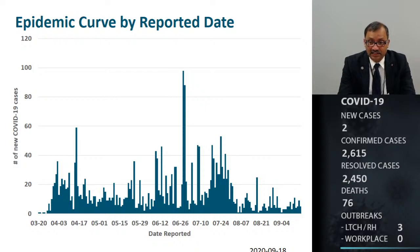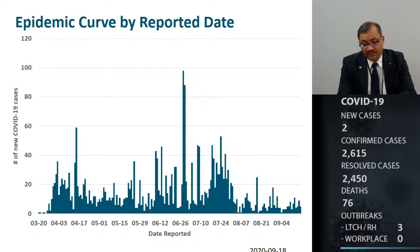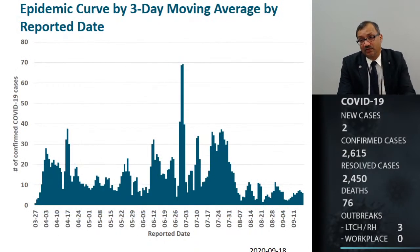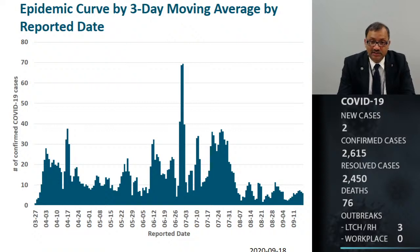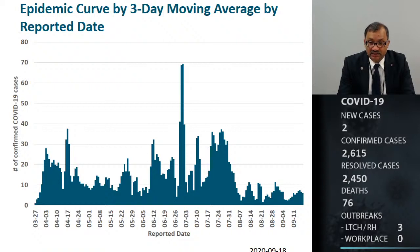Please note that these cases include everyone, whether we are talking about cases in the long-term care home, retirement home, agriculture, farm sector, or community cases. There are a number of ups and downs in this graph, and a better way to look at it is by using a three-day moving average, which helps to smooth some of the day-to-day variation. We can see a significant increase around mid-July that lasted almost to the end of July, and more recently a relatively stable number of cases in the region.